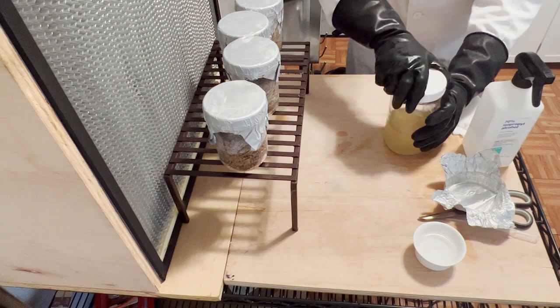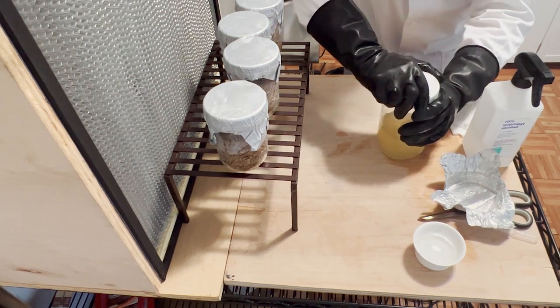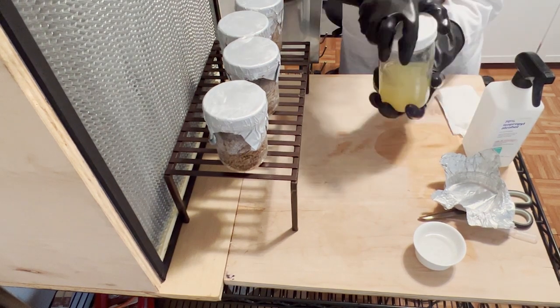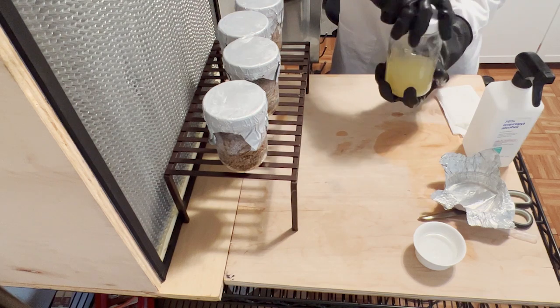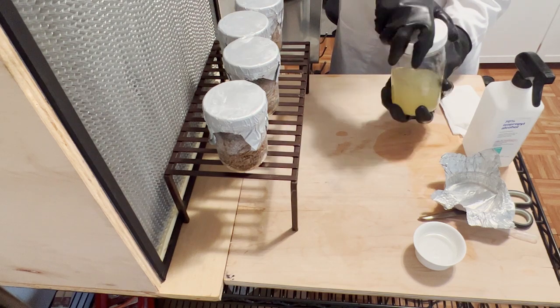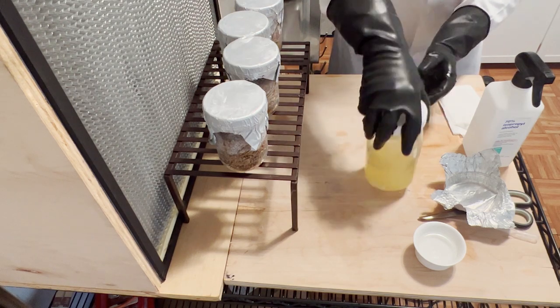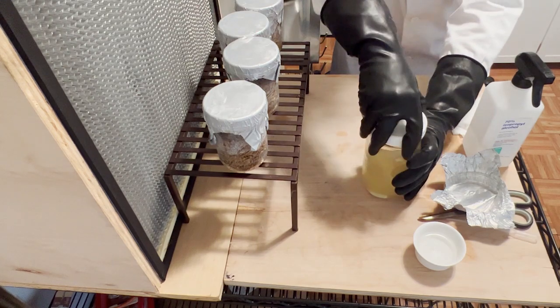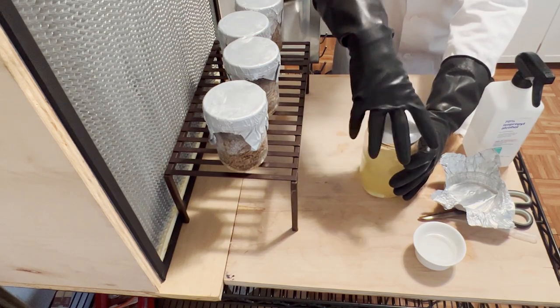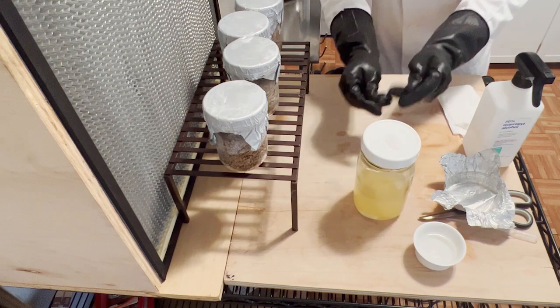The next thing we're going to do is I'm going to pop this lid and get all the lids to be loose so I don't have to fight with them while I'm using the pipette to squeeze the liquid culture, the fluid out of here and into each one of these jars to inoculate the grain. I don't want to take the lid completely off yet, I just want to have them loose.